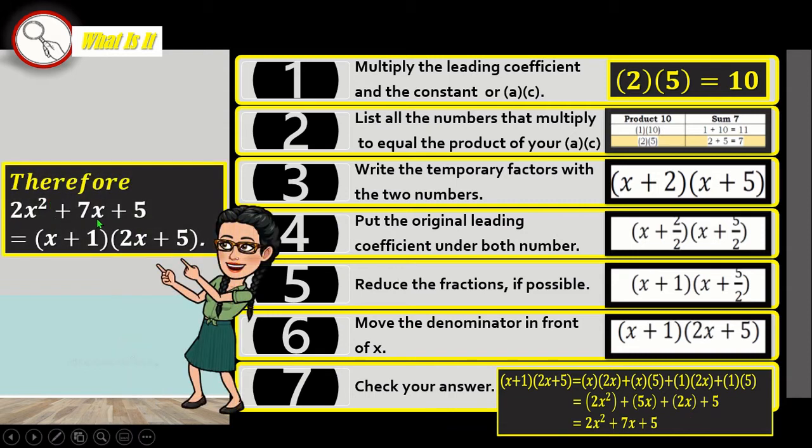Therefore, 2X squared plus 7X plus 5 is equal to the quantity of X plus 1 times the quantity of 2X plus 5.